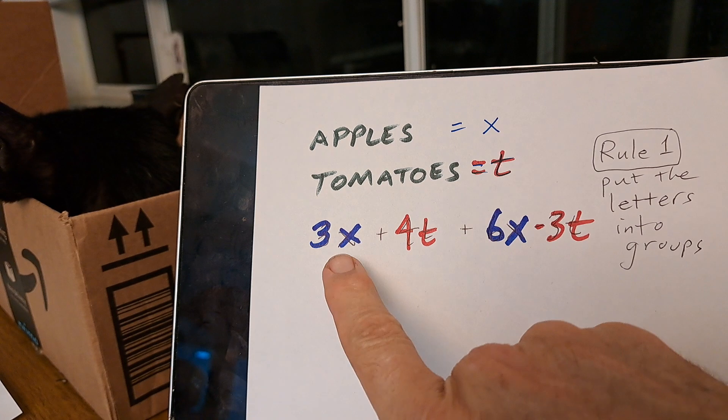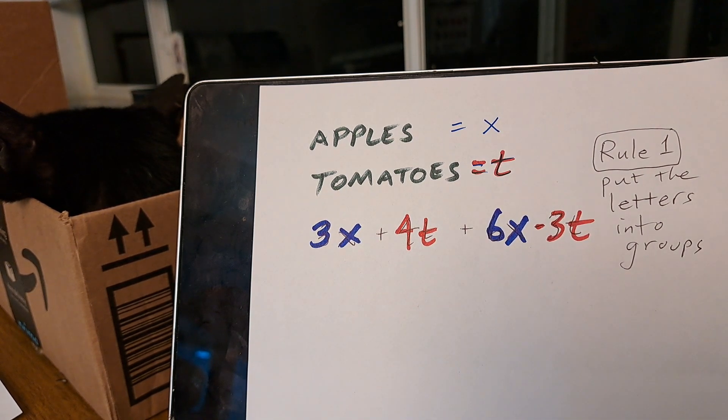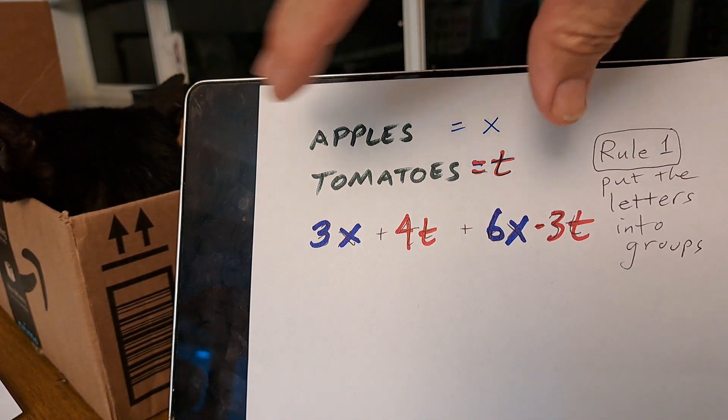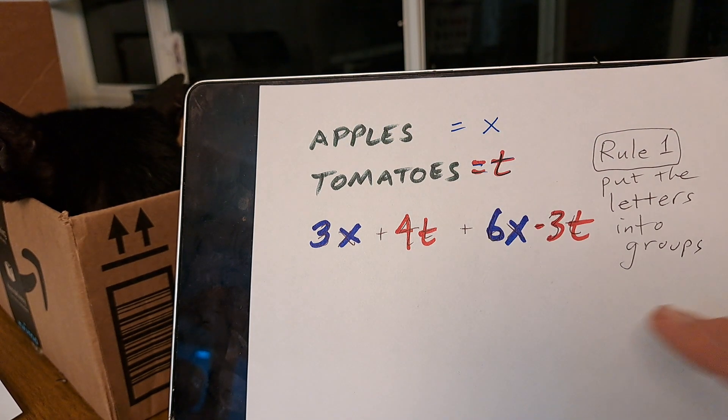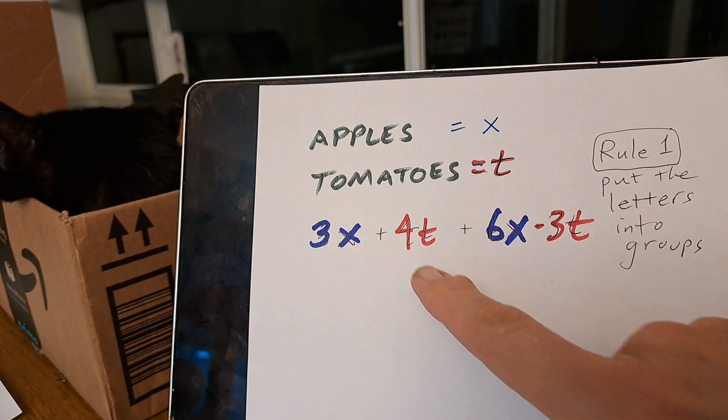So if you see something that has X and an X and a T and a T, the first rule is to put the letters into groups. So these guys go together and these go together.